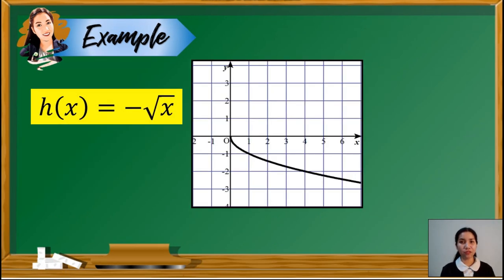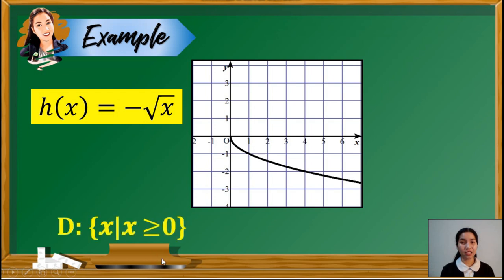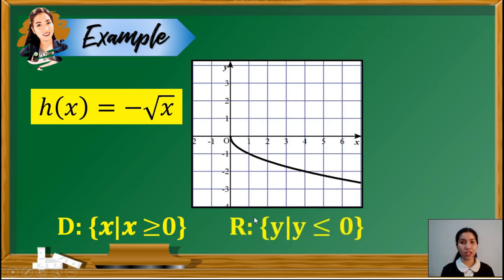Third example, we have h(x) is equal to negative square root of x. Looking at the graph of this radical function, notice that the values of x are from 0 to the right, which means the domain does not contain any negative number. So the domain is x greater than or equal to 0. As for the range, we don't have a graph greater than 0 — we only have a graph below the x-axis. Therefore, the range of this function is the set of y such that y is less than or equal to 0.